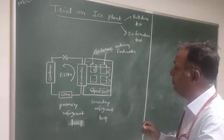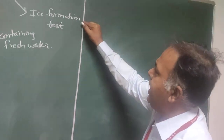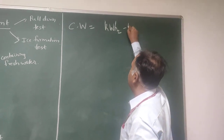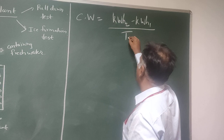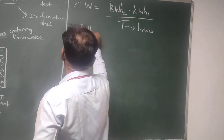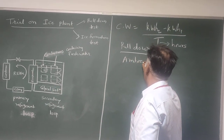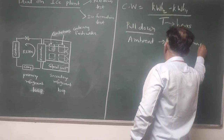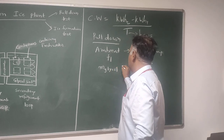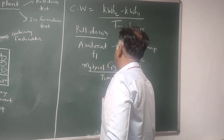For the pull down test calculations: in both tests — pull down test and ice formation test — the compressor work is calculated from the energy meter readings: final reading minus initial reading, with time converted to hours. For the pull down test, you pull down the temperature of the glycol from ambient to negative temperatures. Let T1 be the initial temperature and T2 the final temperature. Knowing the mass of glycol, specific heat of glycol, and ΔT divided by time gives you the refrigerating effect for the pull down test.